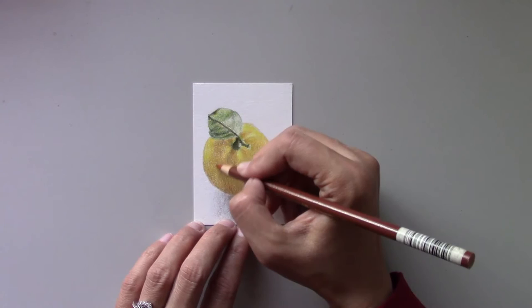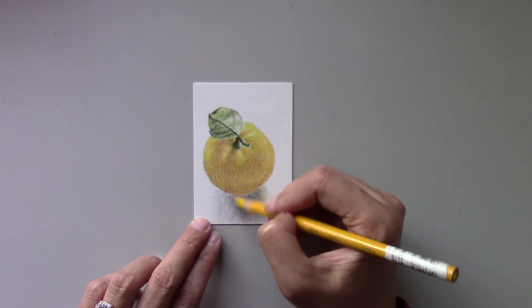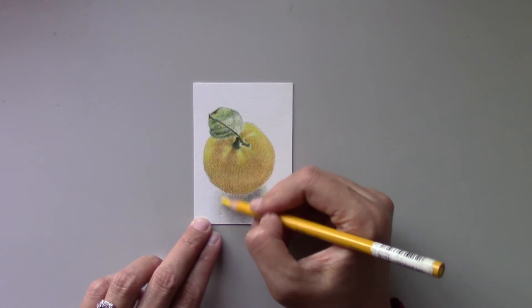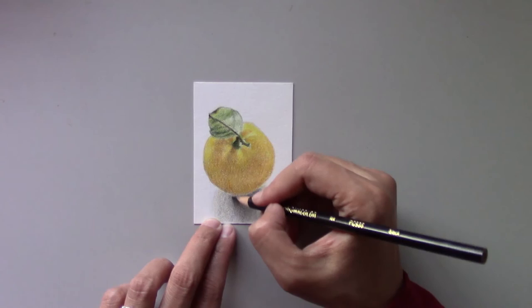Continue with burnt ochre and darken the shadow on the front lemon. Now, to give a hint of orange color on the skin, layer yellowed orange with light pressure. Don't forget the lemon's reflection on the foreground—layer canary yellow on the area with light pressure. Lastly, I go over black again on the shadow under the lemon to give a nice contrast.